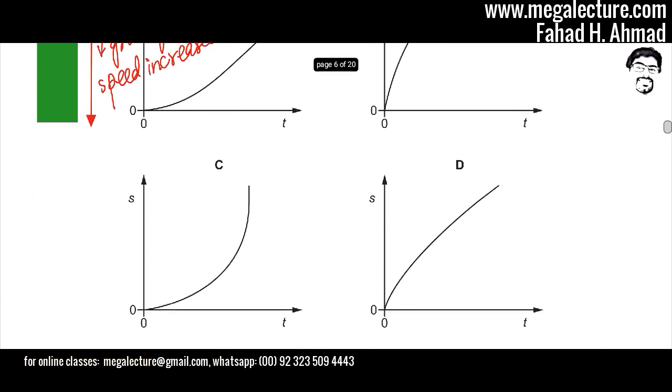If you look at option C, the vertical axis is distance. So initially, lesser distance is covered, but as time progresses, speed increases, more distance is covered. So the graph covers more and more distance in the vertical direction.